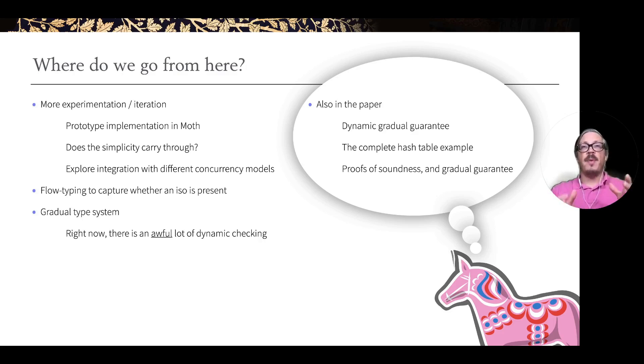We're not prepared to commit to a specific concurrency model yet. Maybe these unsafe objects can be used to write the necessary infrastructure to support actors or some other concurrency model. We'd like to add flow typing to capture when an ISO is present and also a gradual type system.